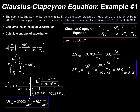The normal boiling point of benzene is 353.2 Kelvin, and the vapor pressure of liquid benzene is 1.19 × 10⁴ pascals at 20°C. We'll need to convert Celsius to Kelvin. The enthalpy of fusion is 9.95 kJ/mol, and the vapor pressure of solid benzene is 137 kPa at −44.3°C.